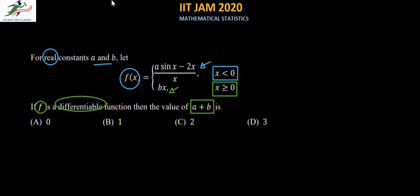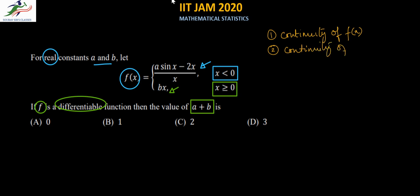To solve this problem we must check two conditions. The first condition is the continuity of f(x), and the second condition is the continuity of f'(x), the first derivative. We do this because f being differentiable requires f(x) to be continuous — only then does f'(x) exist over the entire domain — and f'(x) must itself be continuous. So f must fulfill both conditions.